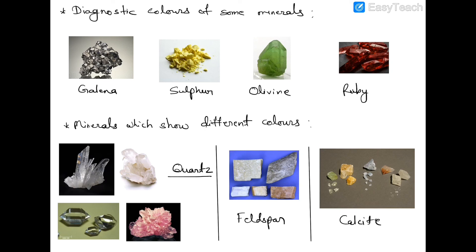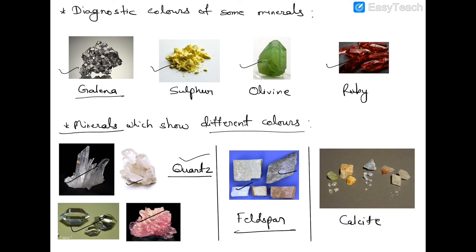Some diagnostic colors of minerals: galena is dark lead gray, sulfur is yellow, olivine is olive green, and ruby is red. Minerals like quartz show different colors — white, pink, green, and colorless. Feldspar shows white, gray, and dirty white. Calcite shows colorless, white, gray, yellow, and some shades of red. In the next lecture we will continue with other physical properties of minerals.